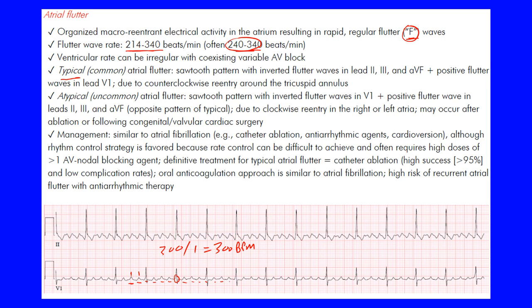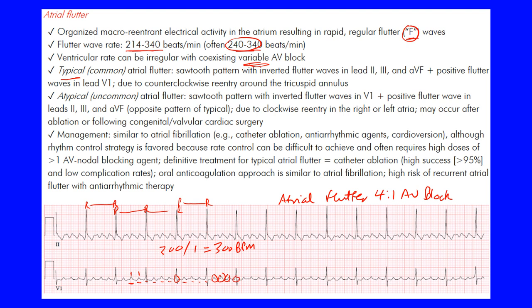The ventricular rate can be irregular with a coexisting variable AV block, but in this case the R-waves are equally spaced — it's a regular rhythm. This would be atrial flutter with a 4:1 AV block. We say 4:1 because there are one, two, three flutter waves visible, plus one buried within the QRS complex — four flutter waves for every one QRS complex.